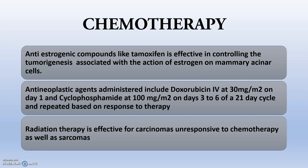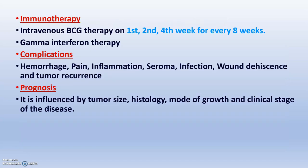Anti-estrogenic compounds like tamoxifen are effective because estrogen acts on mammary acinar cells, driving uncontrolled proliferation leading to neoplasia. Anti-neoplastic agents include doxorubicin IV at 30 mg per meter squared and cyclophosphamide based on dosage protocols. Radiation therapy is effective for carcinoma unresponsive to chemotherapy. Immunotherapy includes intravenous BCG therapy on the 1st, 2nd, and 4th week of every 8-week cycle. Complications include hemorrhage, pain, dehiscence, and tumor recurrence.